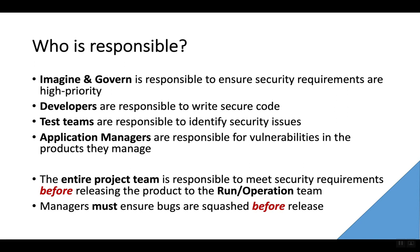Everyone has their place in ensuring that the bugs are found as quickly as possible, and the entire project team overall is responsible to make sure the security requirements get implemented before releasing the product into the production environment. Managers have an additional responsibility in that they need to identify how the bug came to be in the first place, track down the root cause, and eliminate that issue from the process so that in the future, we proactively prevent bugs rather than having to come back and fix them.